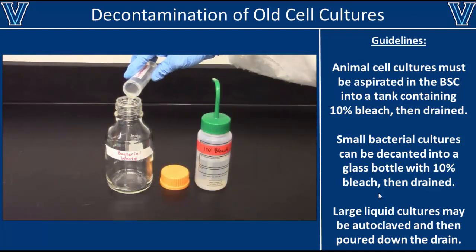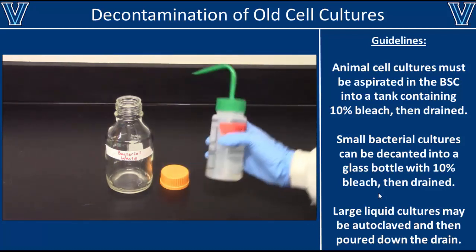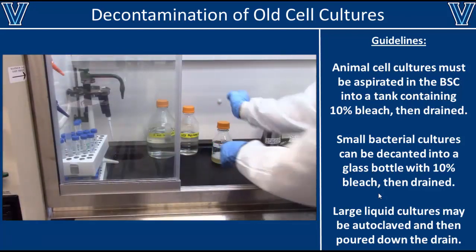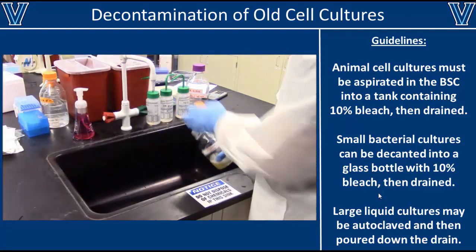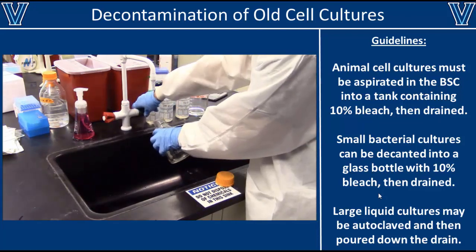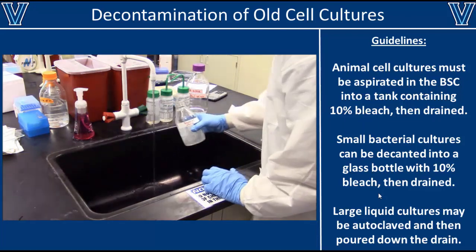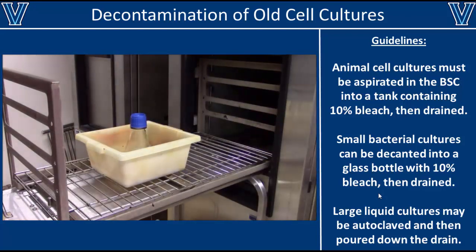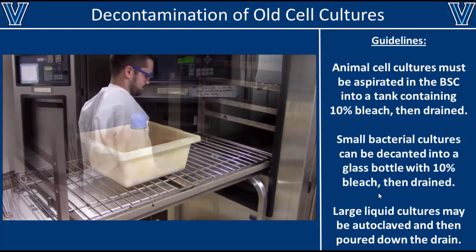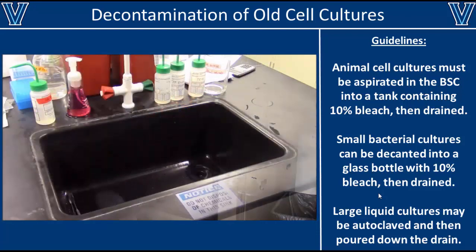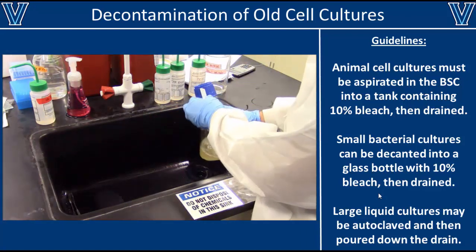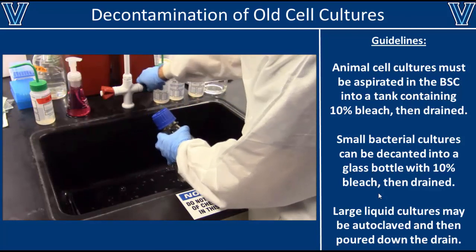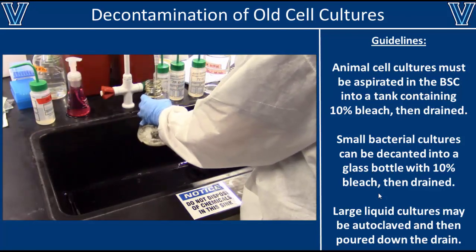Small bacterial cultures can be decontaminated quickly by adding 10% bleach in a 1-to-1 ratio in a glass bottle. This glass bottle should be kept in the hood in case there are any bleach vapors. After the sample has been incubated with bleach overnight, it can be poured down the drain and rinsed out with tap water — but always check with your supervisor first, as this is not an option at some other institutions. Large bacterial cultures should be sterilized in the autoclave at 121°C for 30 minutes. Once these cultures come out of the autoclave, they can be poured down the drain. Autoclaving is preferred over bleach because it doesn't pose any chemical hazards.